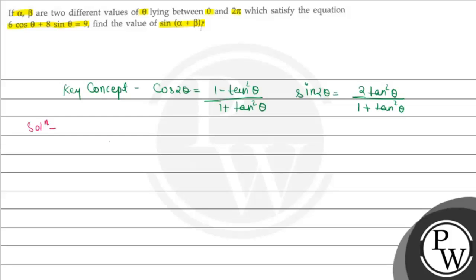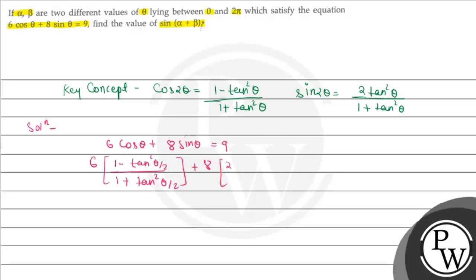We have the equation 6cosθ + 8sinθ = 9. We substitute cosθ using the half-angle formula: cosθ = (1 - tan²(θ/2)) / (1 + tan²(θ/2)), and sinθ = 2tan(θ/2) / (1 + tan²(θ/2)).